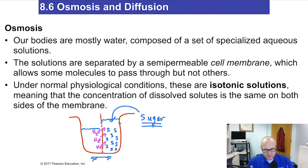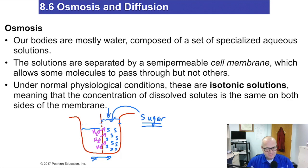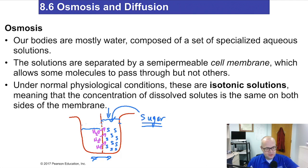Now, this phenomenon does not occur indefinitely - eventually it will stop. When it stops is when the pressure of the water pushing down against the membrane stops osmosis from occurring. That's known as osmotic pressure. Osmotic pressure is the pressure experienced by the membrane stopping osmosis.